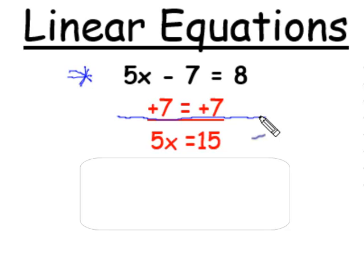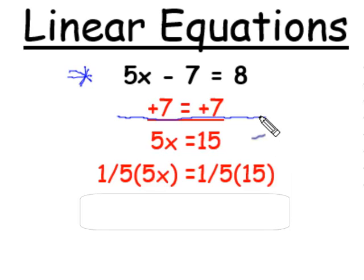Since we're looking for an x where 5x minus 7 will equal 8, if we add 7, we will get numbers 5x and 15, which should also be equal. We divide these numbers, 5x and 15, by 5, or multiply them by 1/5.